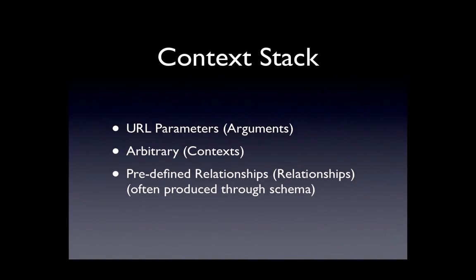There are three different ways to actually get context. The first is arguments — this is really common, because when we start dealing with nodes, one of the first things people like to do is get the node context through an argument, meaning it's coming across the URL. We can also get contexts arbitrarily — you could say, I want node 10, I want user 35, those sorts of things. And then predefined relationships: I made mention of being able to load the user who's the author of the node you're on into the context stack, and that would be a predefined relationship.